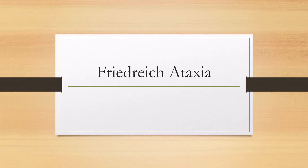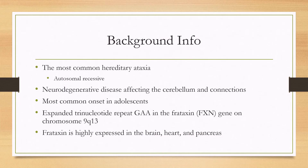Let's talk about Friedreich's ataxia. This is the most common hereditary ataxia and it presents in an autosomal recessive pattern. It is a neurodegenerative disease affecting the cerebellum and its connections, most commonly presenting in adolescents. It is caused by an expanded trinucleotide repeat of GAA in the frataxin gene on chromosome 9q13.